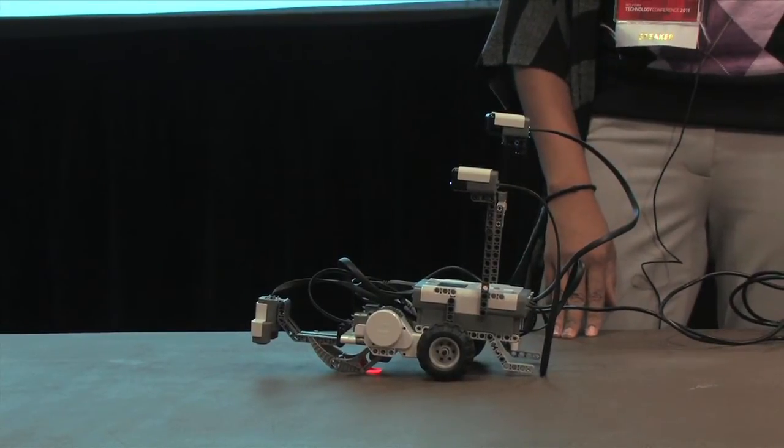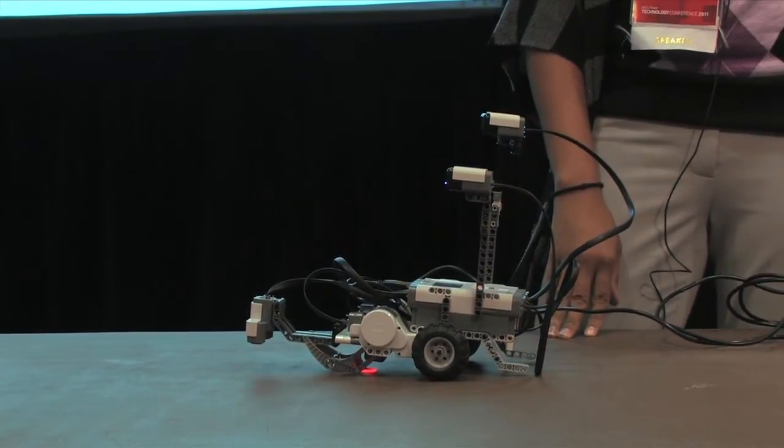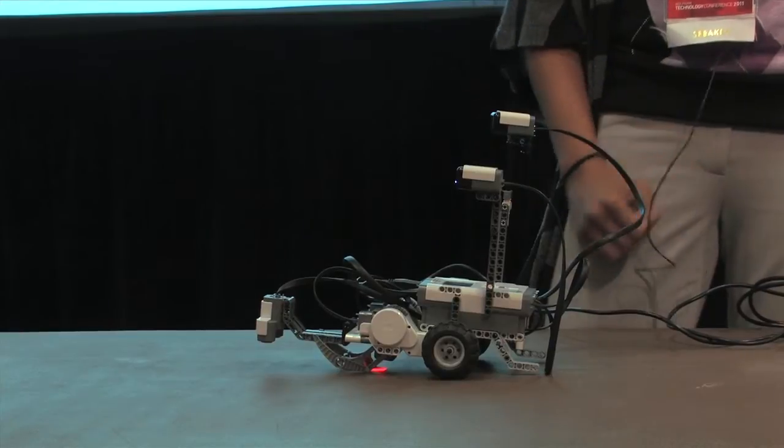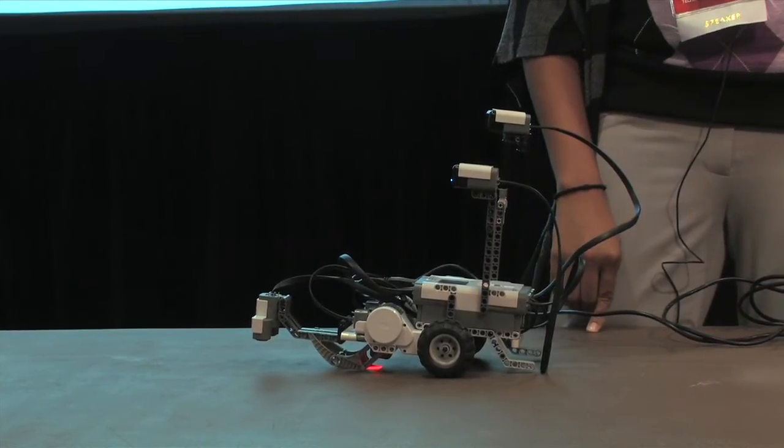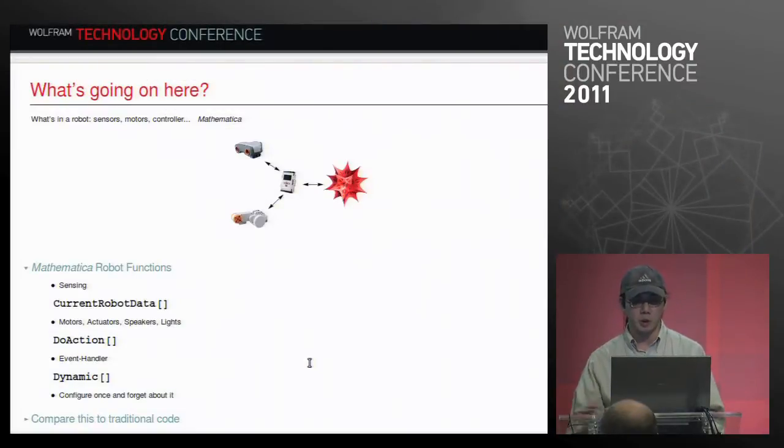So let's think about this a little more in depth. What's really going on here? What's in a robot? The Lego Mindstorm kit is a pretty cool kit. For $300, you get all the basic functionality of a robot. You get sensors for measuring data from the physical world. You get motors that you can control. Actuators, lights, speakers. You've got a little microcontroller here. And now we're bringing Mathematica into the loop.